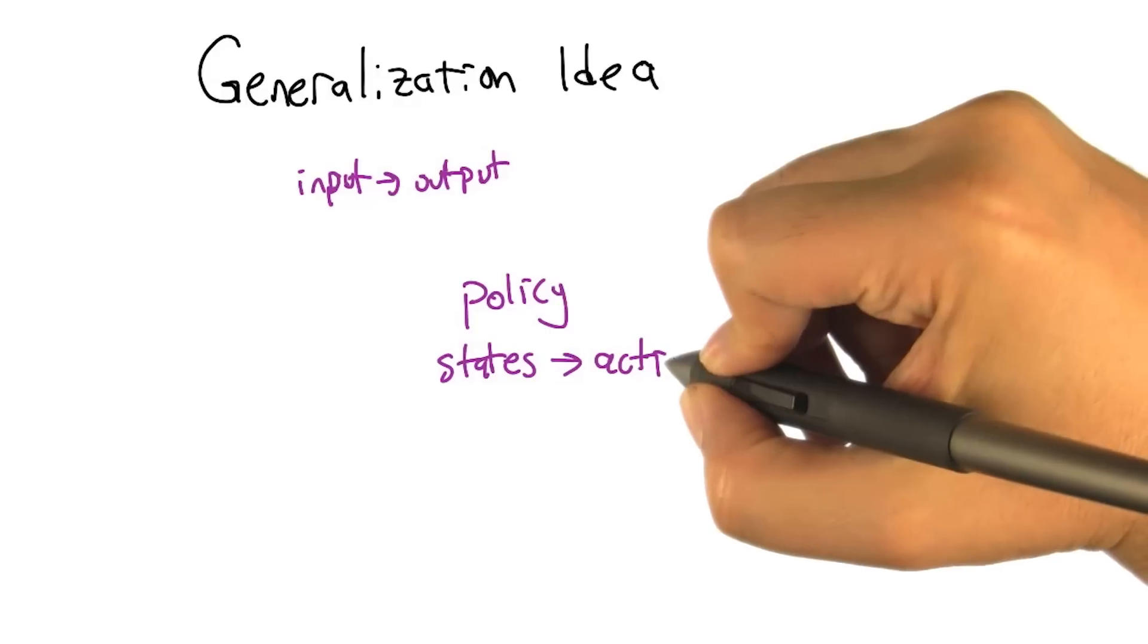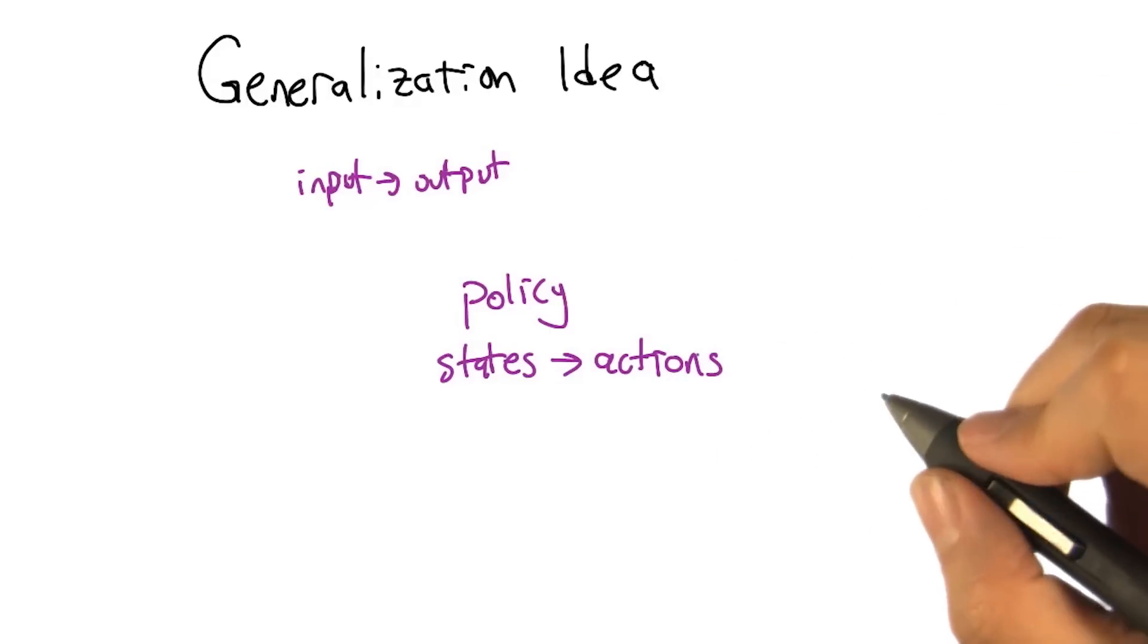So policy maps states to actions. But that's usually hard. So we usually learn some kind of intermediate thing, like a value function.